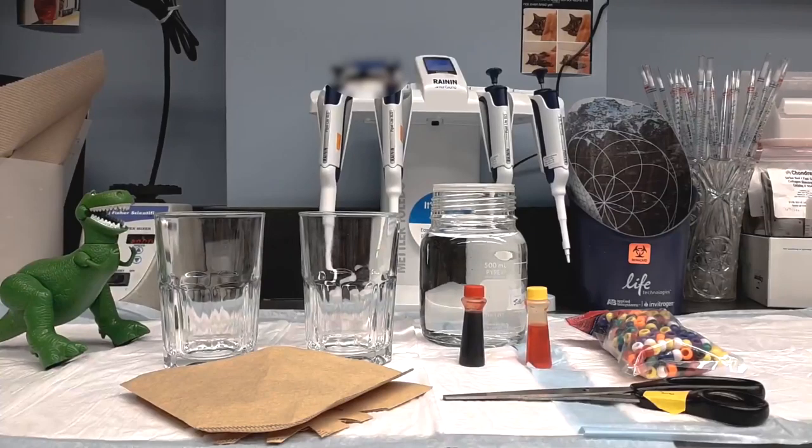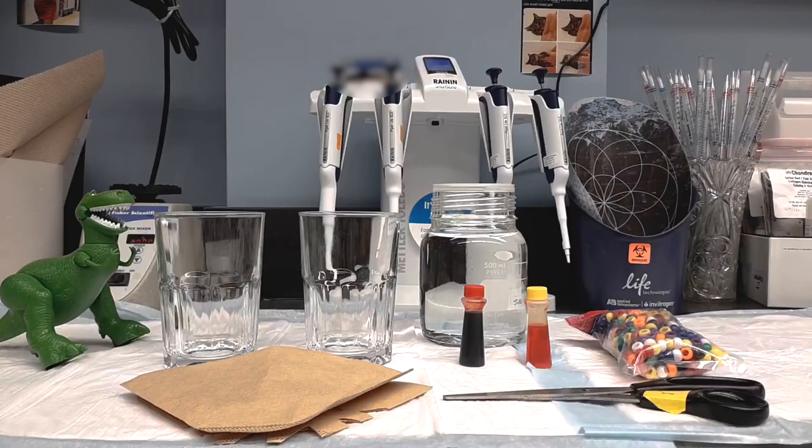Let's do an experiment to understand better how the kidneys work. All you'll need is two cups, a jar of water, red and yellow food coloring, beads, two coffee filters, and scissors.